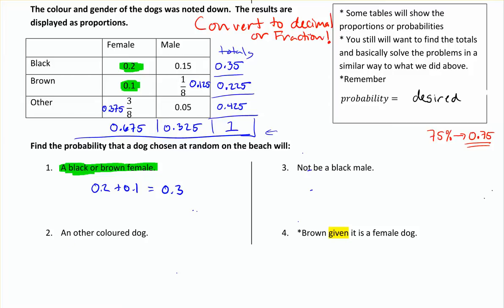What's the probability of getting an other-colored dog? The total others are 0.375 and 0.05. So the total proportion of other-colored dogs is 0.425, because I've added those two together — which I'd already done in the column: 0.375 plus 0.05.